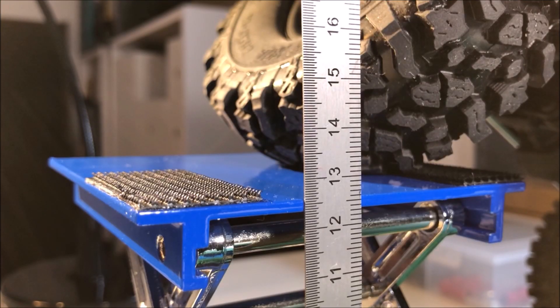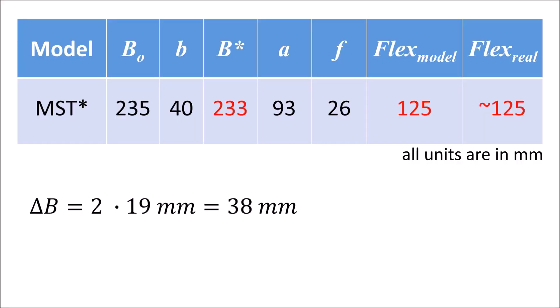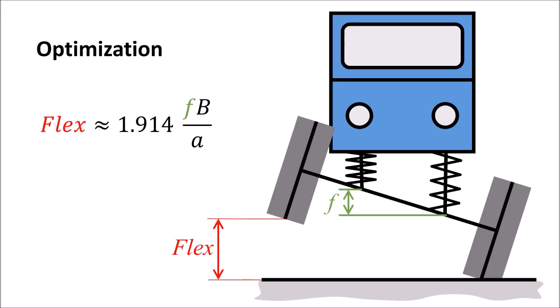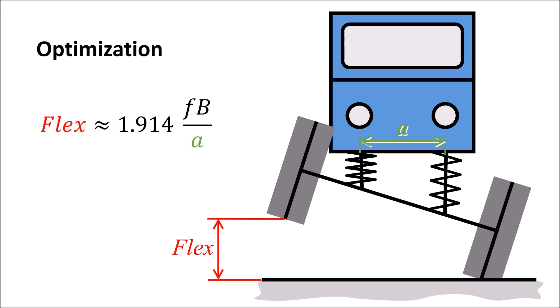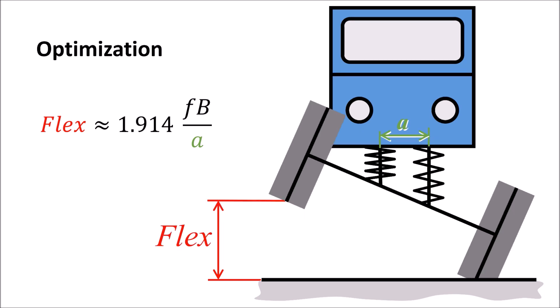And you see, even with the wider crawler, the model works well to predict the real flex. The flex can also be improved by increasing the spring deflection or by reducing the lateral spring distance. Thanks for watching.